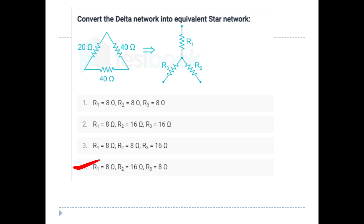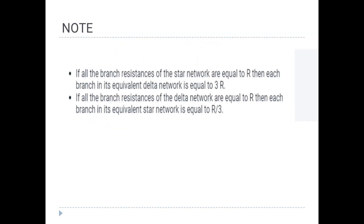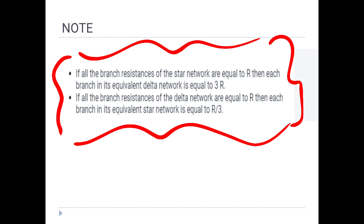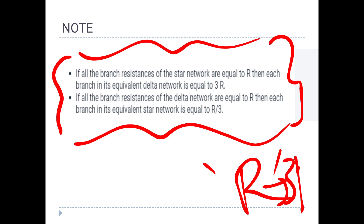Now we will solve these options and questions. If all the branch resistances of the star network are equal to R, then each branch in its equivalent delta network is equal to 3R. If all branch resistances of the delta network equal R, then each branch in the equivalent star network equals R/3.